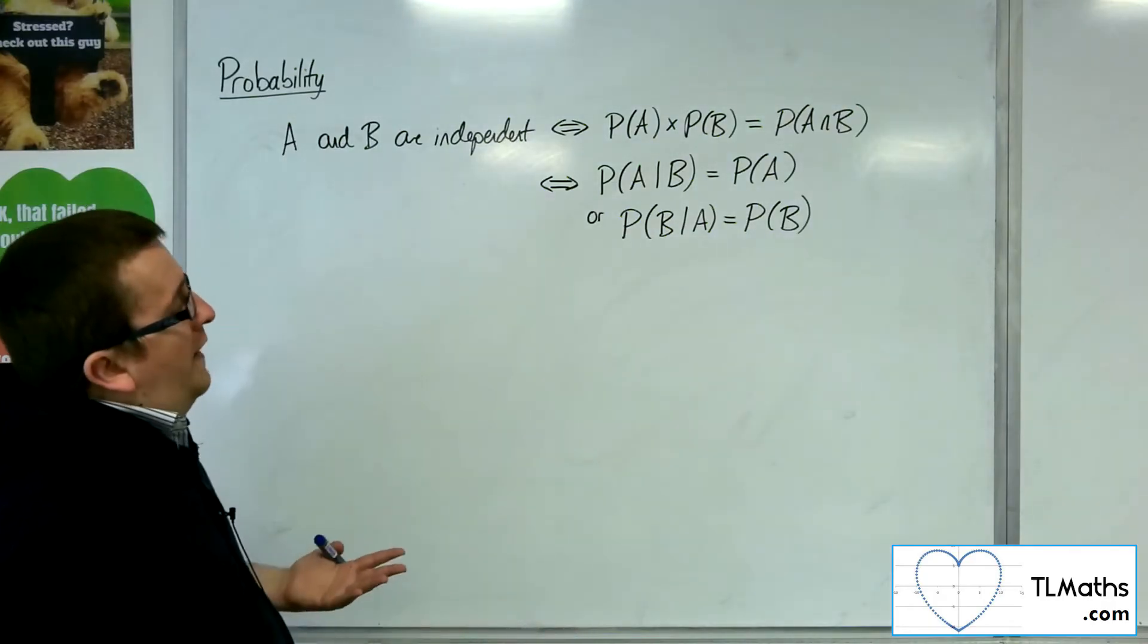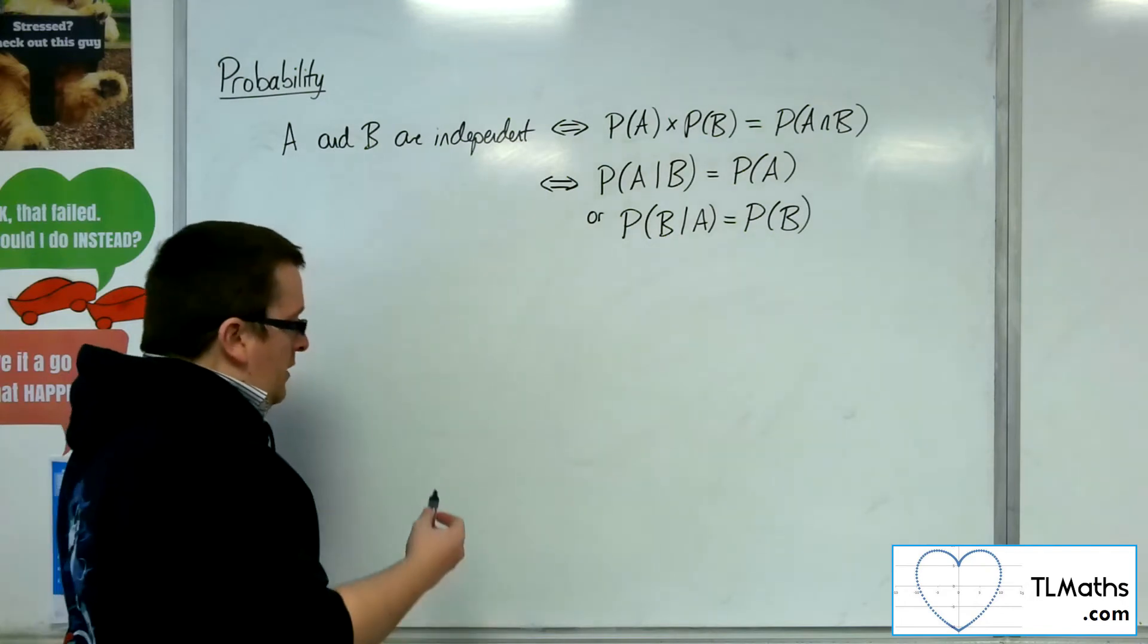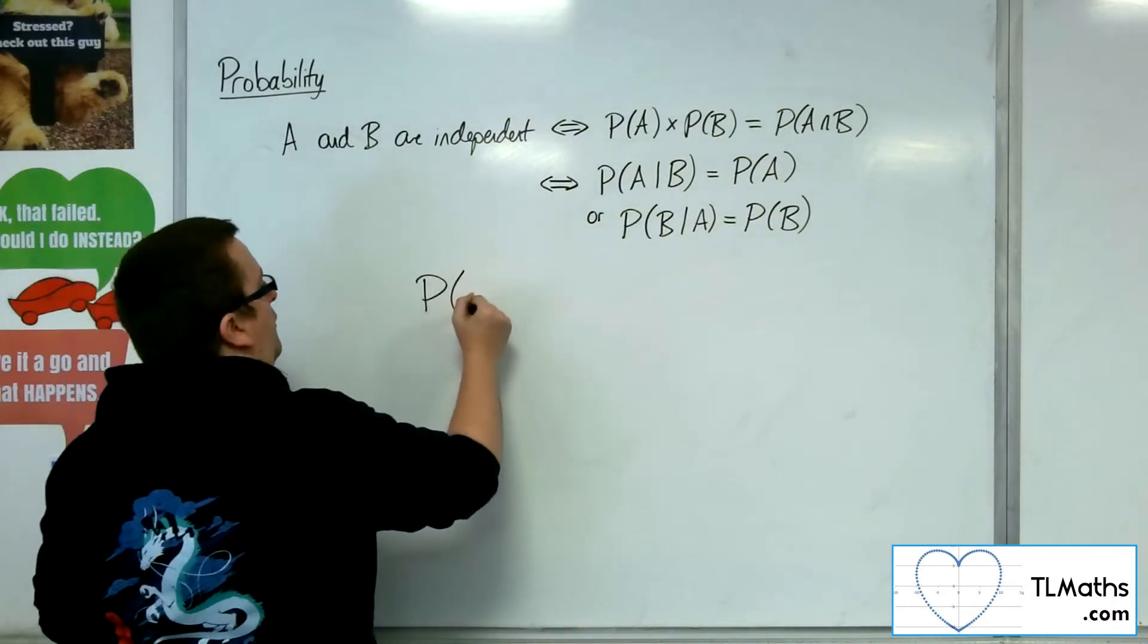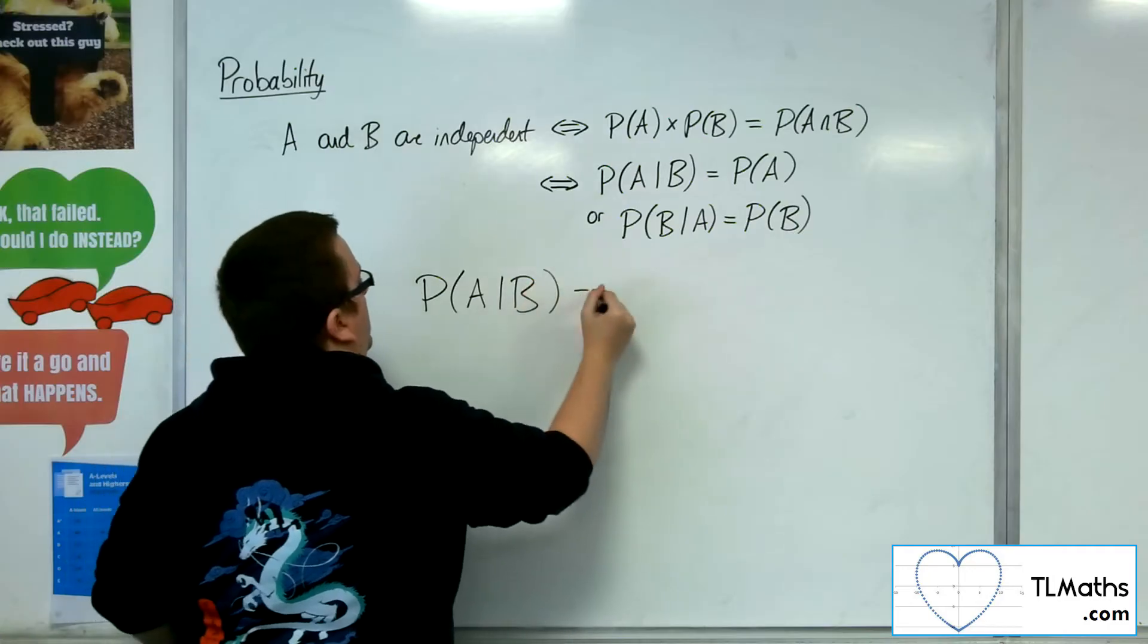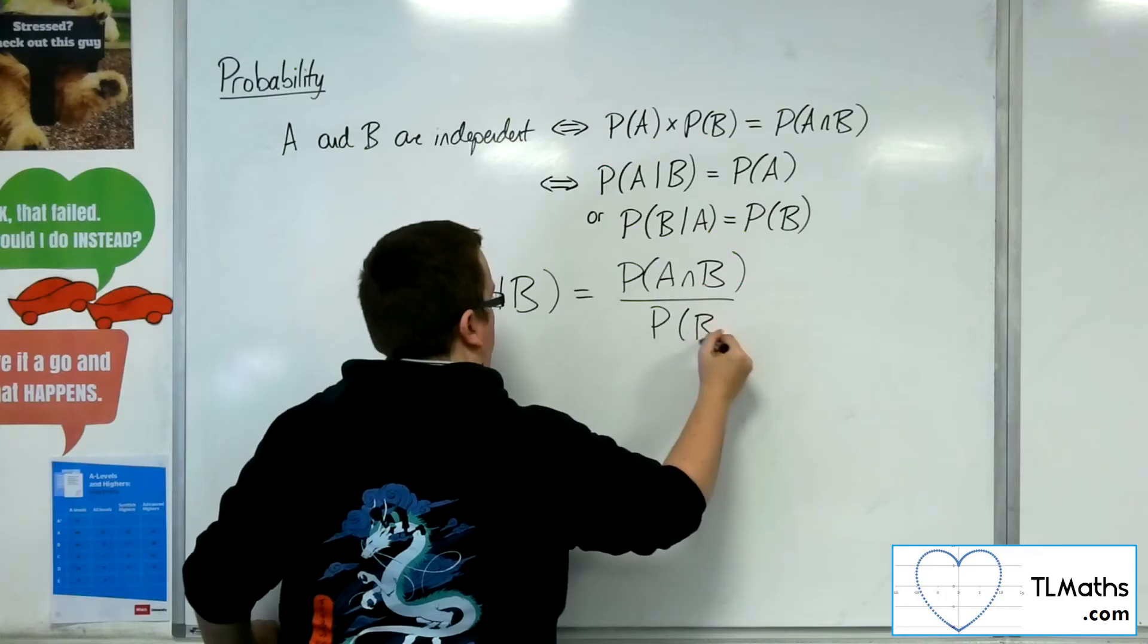Now, the knock-on effect for the formula, we say that the probability of A given B is the probability of A intersection B over the probability of B.